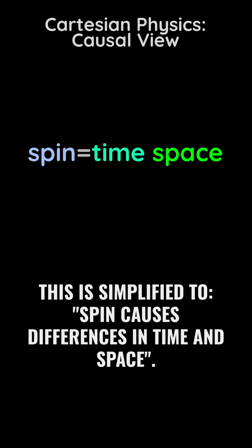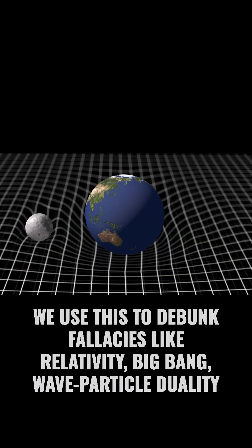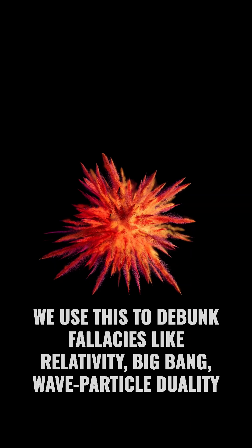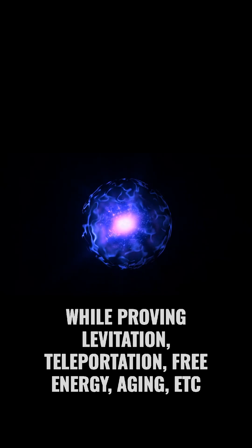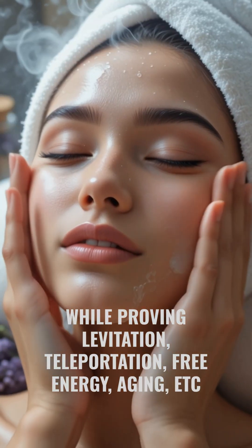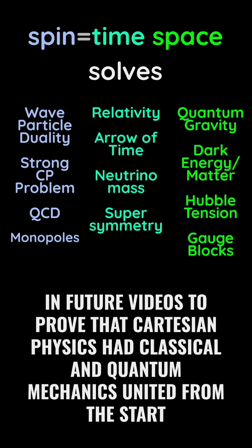Spin causes differences in time and space. We use this to debunk fallacies like relativity, Big Bang, wave-particle duality, while proving levitation, teleportation, free energy, aging, etc., in future videos to prove that Cartesian physics had classical and quantum mechanics united from the start.